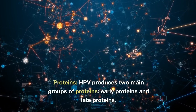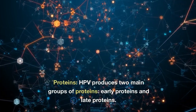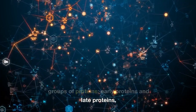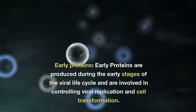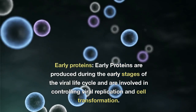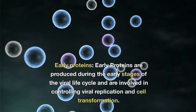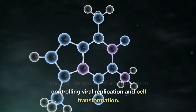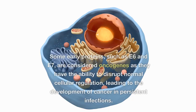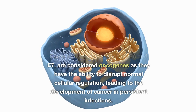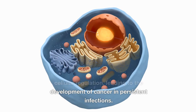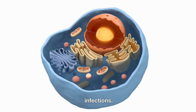HPV produces two main groups of proteins: early proteins and late proteins. Early proteins are produced during the early stages of the viral life cycle and are involved in controlling viral replication and cell transformation. Some early proteins, such as E6 and E7, are considered oncogenes as they have the ability to disrupt normal cellular regulation, leading to the development of cancer in persistent infections.